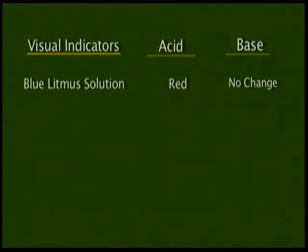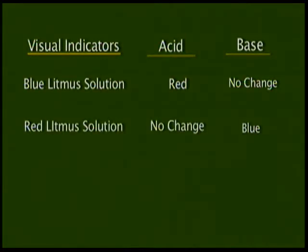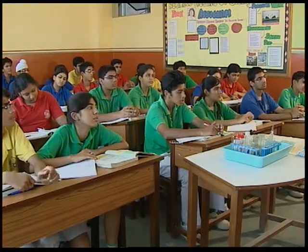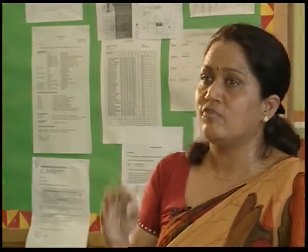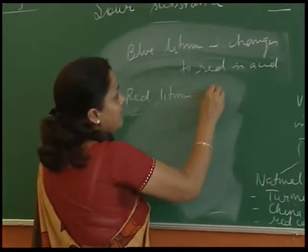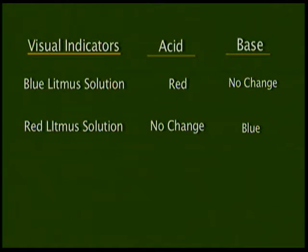Blue litmus changes to red in an acid, and red litmus changes to blue in a base. If you put red litmus in an acid, there will be no color change. So red litmus can also be used to test acidic substances — if it doesn't change color, it's an acid; if it changes from red to blue, it's a base.